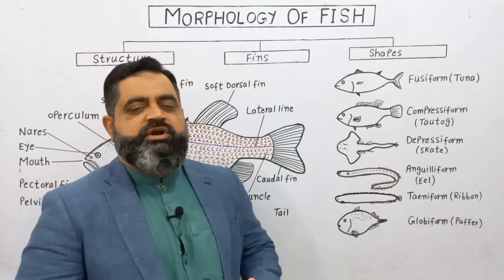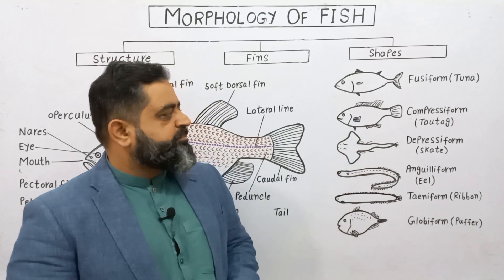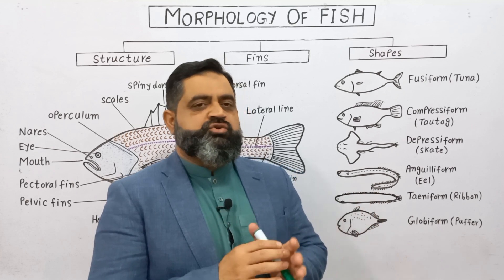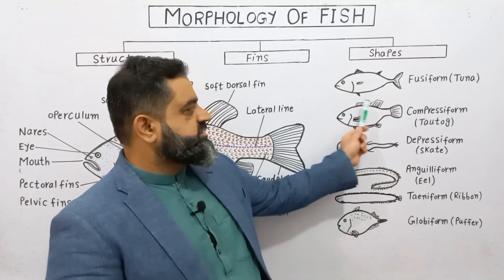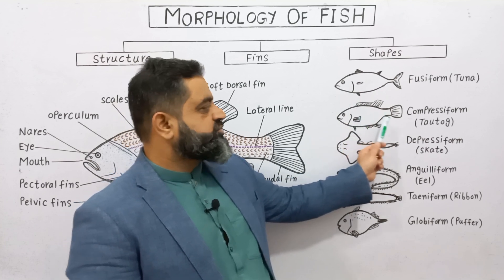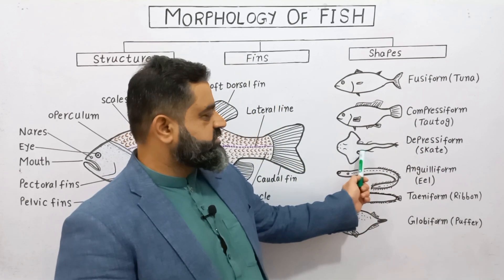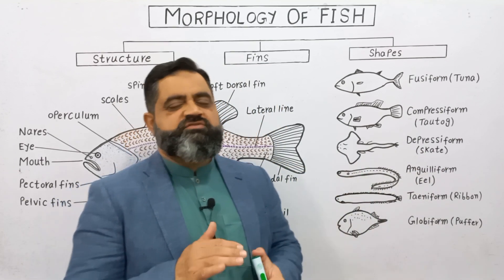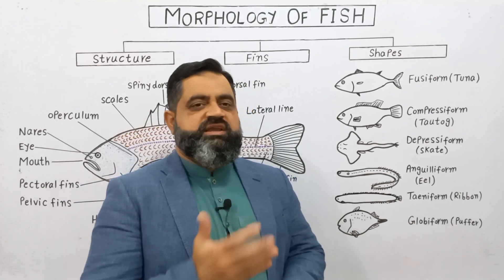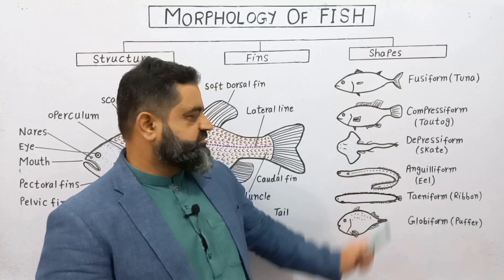These fishes pointed at both the anterior and posterior ends are known as fusiform, and tuna is a very important example. The second type is compressiform — they are compressed from the lateral side, similar in profile to fusiform but laterally compressed. An example is the tautog. The third form is depressiform, which is compressed dorso-ventrally, just like a leaf. Examples of this form are skates and rays.